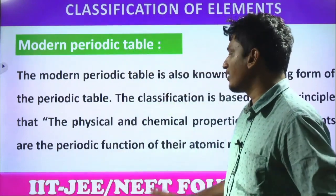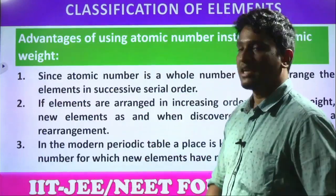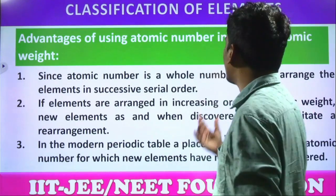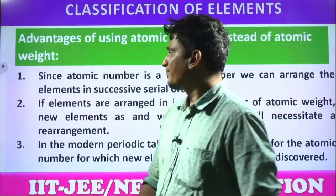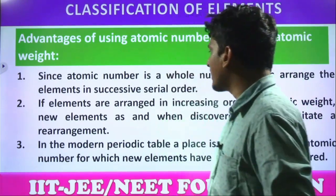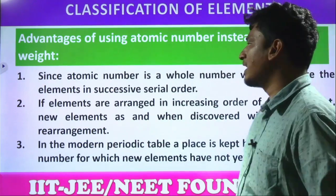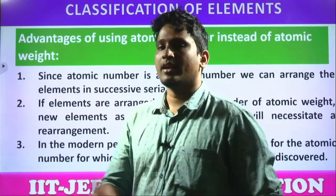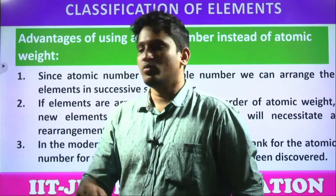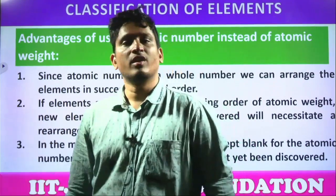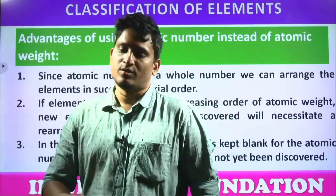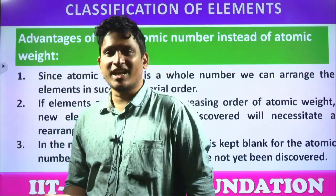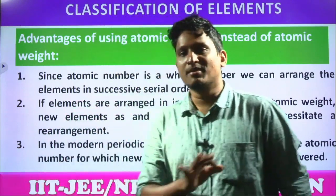So that is modern periodic classification. What is the advantage of using atomic number instead of atomic weight? Since atomic number is a whole number, we can arrange the elements in a successive serial number — 1, 2, 3, 4, 5. Whereas atomic mass can be 12.5, 16.3 — not whole numbers. Atomic number is the best.